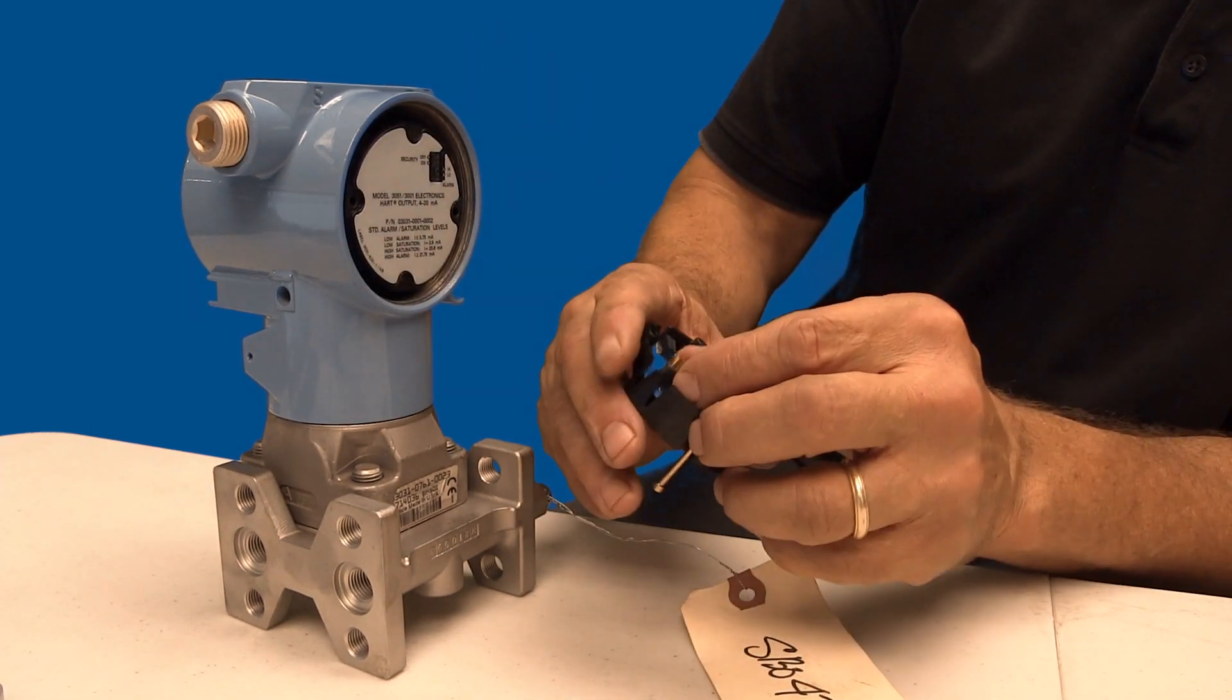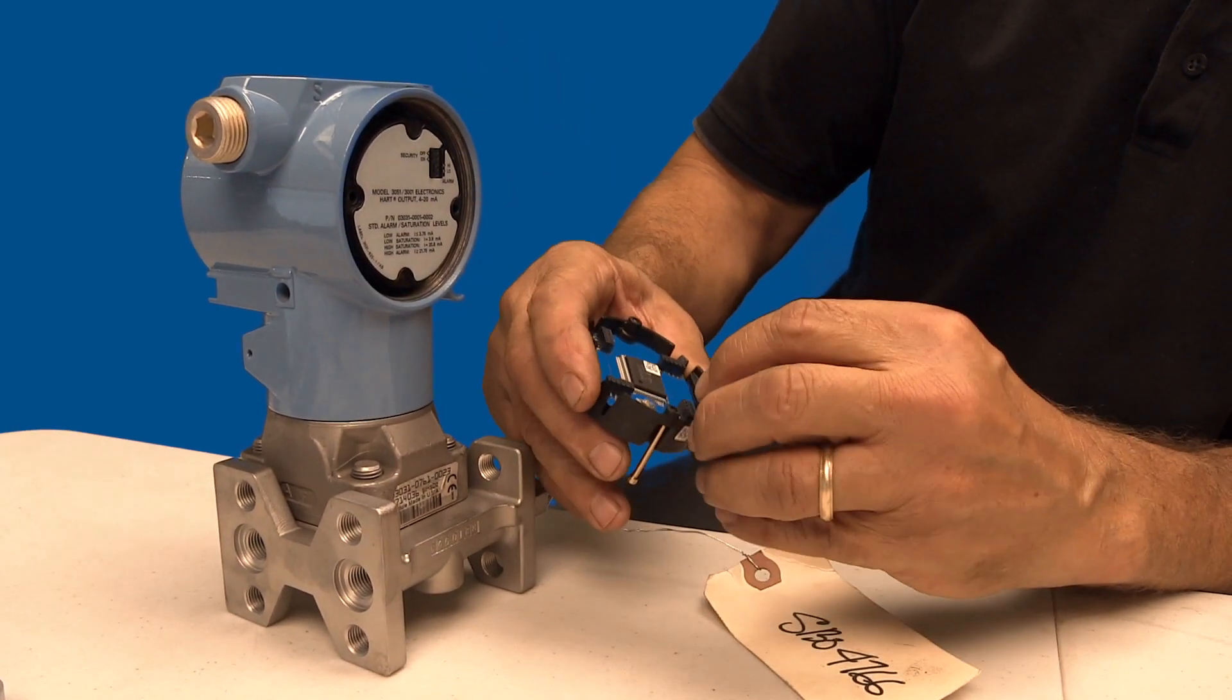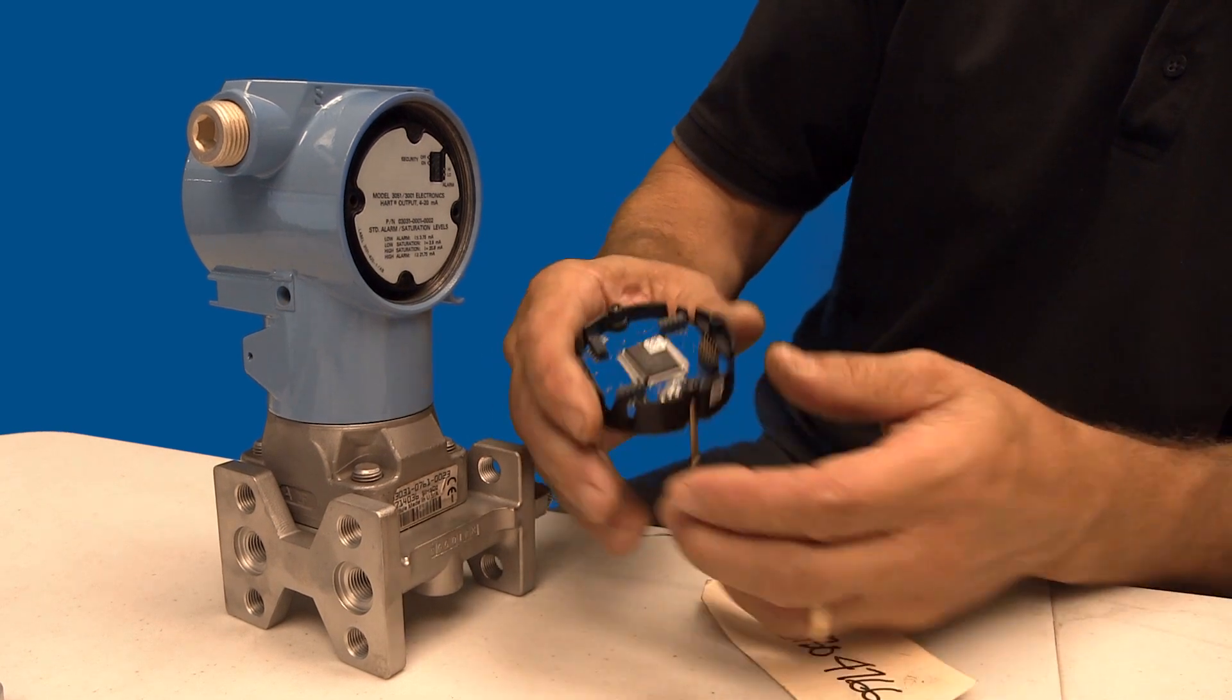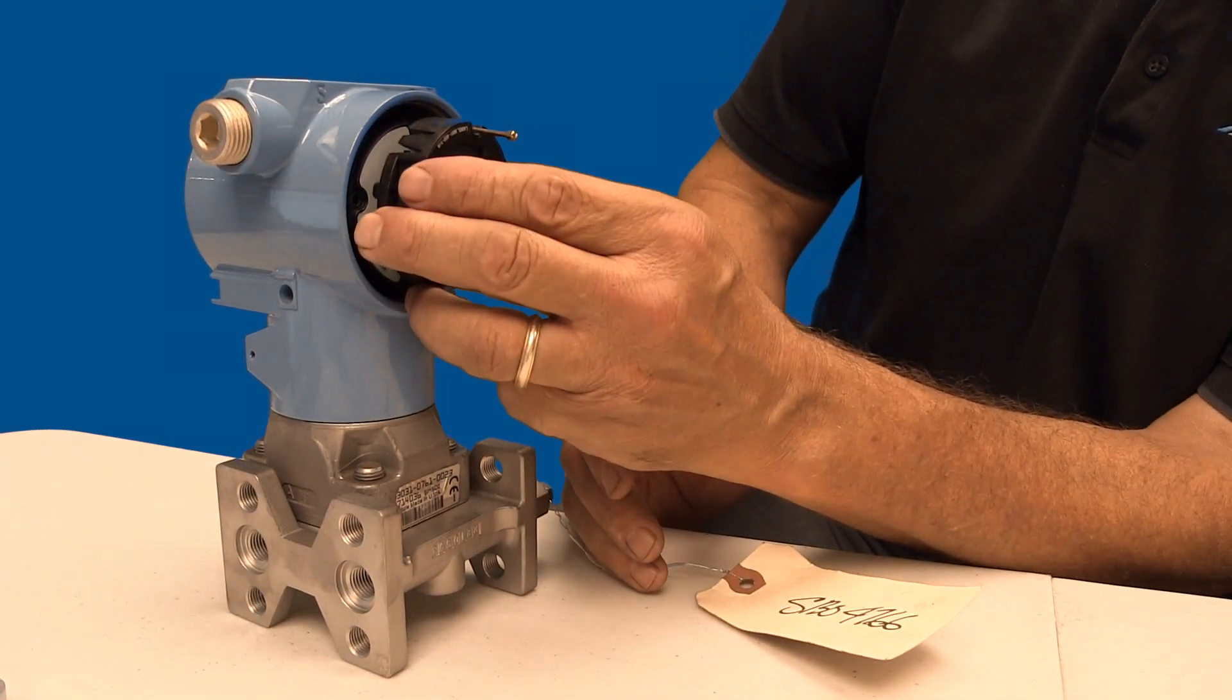If you will be mounting the transmitter sideways, you will want to install the meter so that when you are looking at it, you can read it. Make sure the pins line up correctly with the holes.